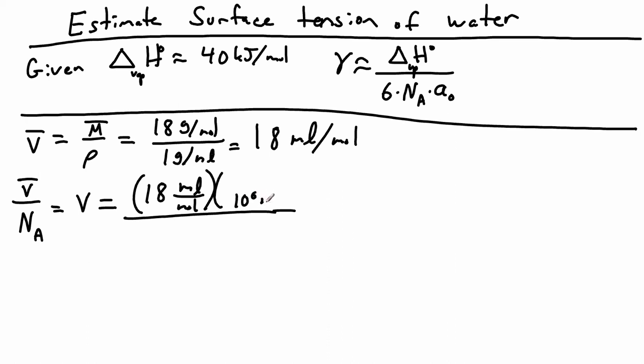There's 10 to the sixth mils in one meter cubed, divided by Avogadro's number, 6.02 times 10 to the 23rd, one over moles. So we can cancel our mils here and end up getting our answer in meters cubed. We're going to have 18 times 10 to the negative 6 meters cubed for a single mole of water molecules. We divide by Avogadro's number to get a single water molecule, and this comes up to 2.99 times 10 to the negative 29 meters cubed. That gives us the volume of a single water molecule.